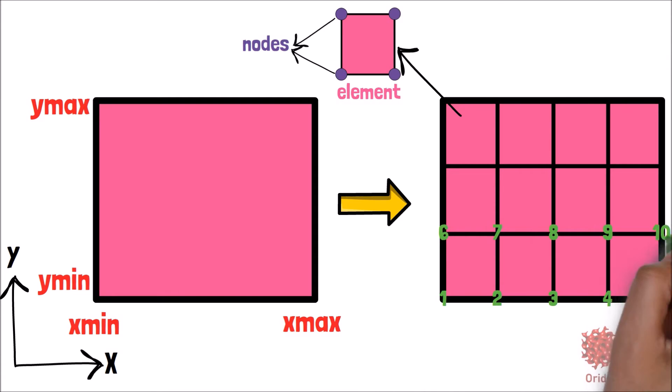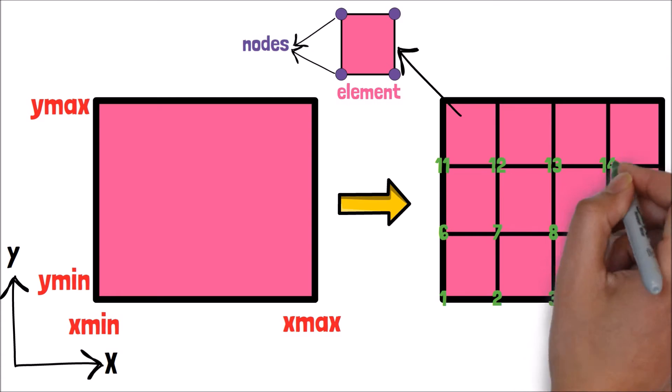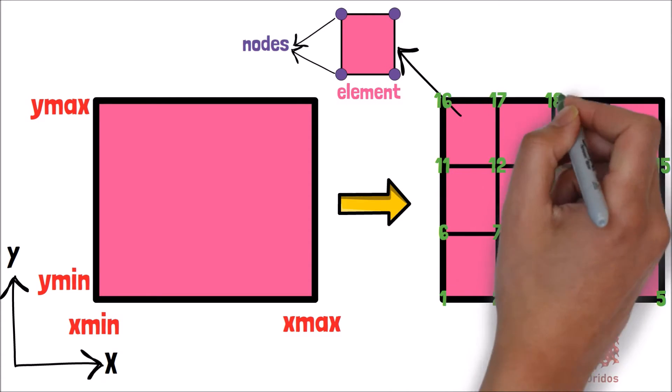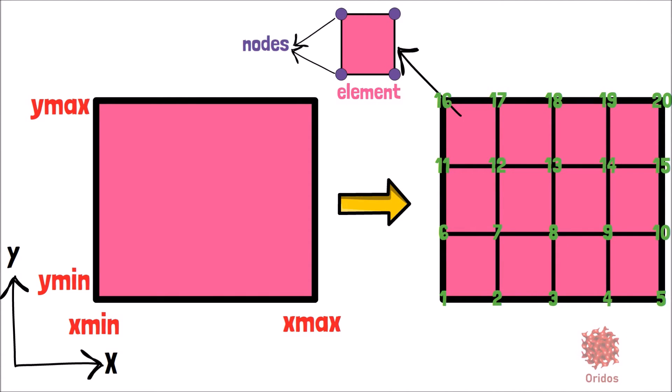The node numbers will be 1, 2, 3, 4, 5 in the first row, 6, 7, 8, 9, 10 in the second row, and so on. If you noticed, the number of nodes in each direction is the number of elements plus 1.